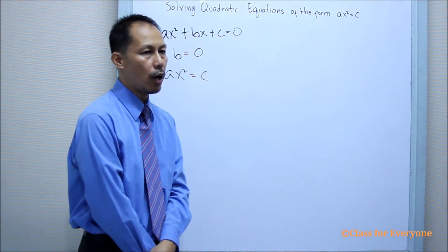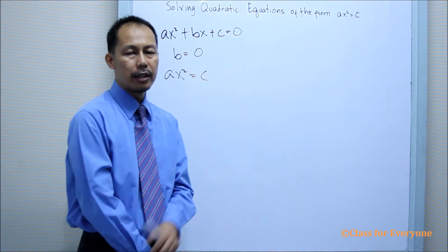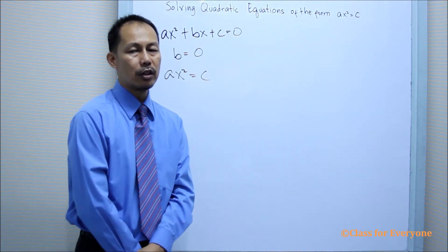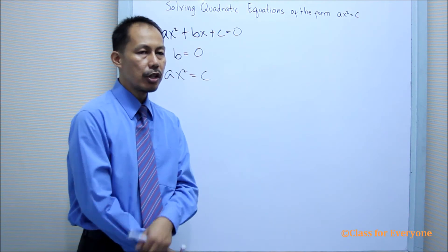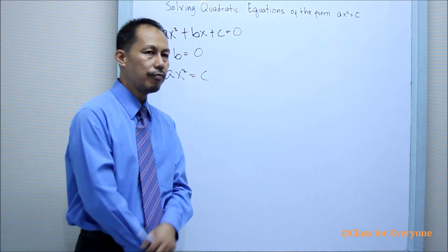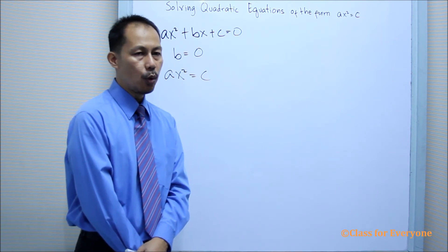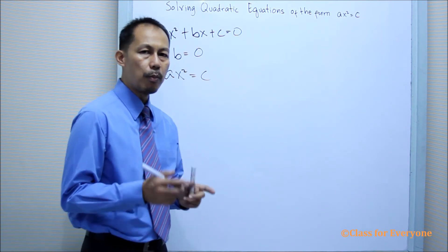Number one is to isolate the quadratic term. Next is to divide both sides by the coefficient of the quadratic term. Next, remove all the parentheses and also clear the fractions. Then, find the square root of both sides.